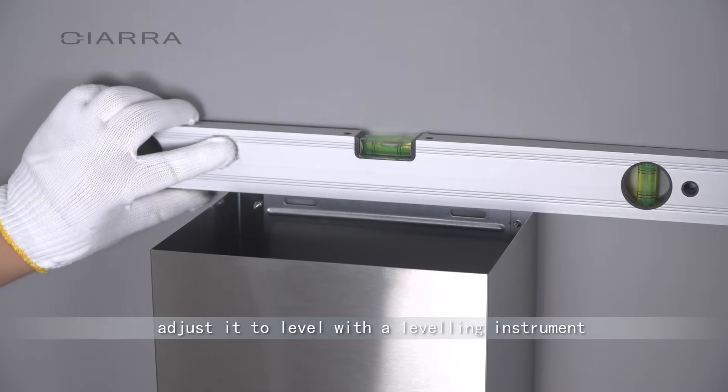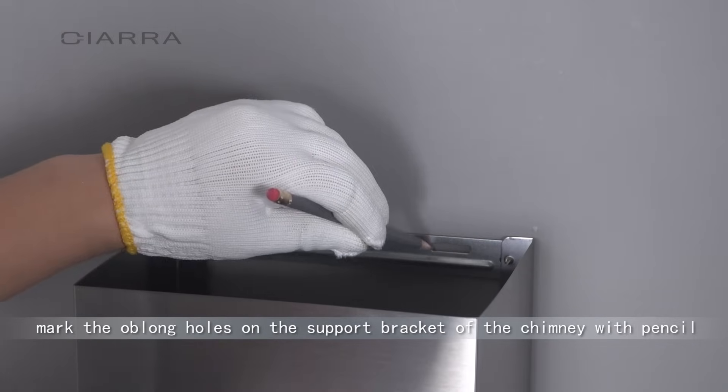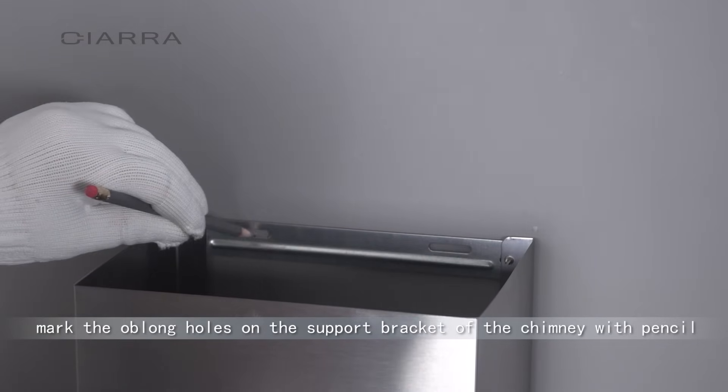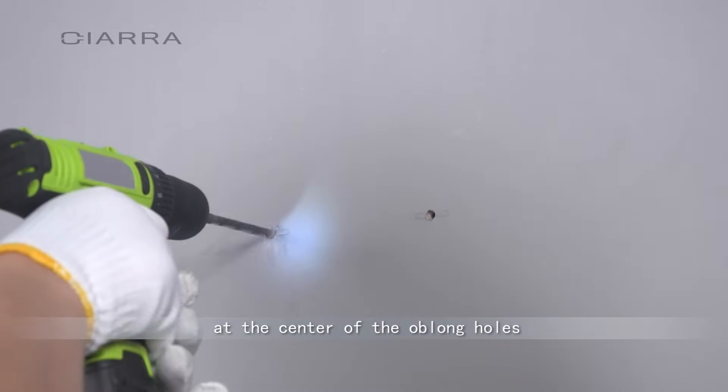Adjust it to level with a leveling instrument. Mark the oblong holes on the support bracket of the chimney with pencil. Remove the chimney and drill two holes at the center of the oblong holes.